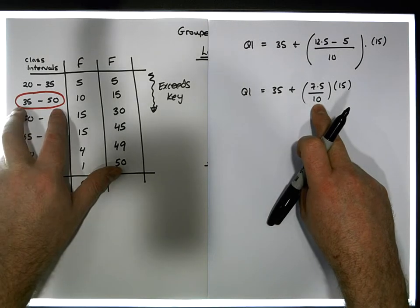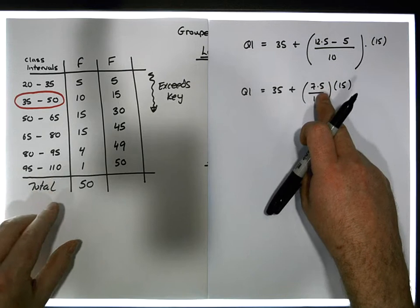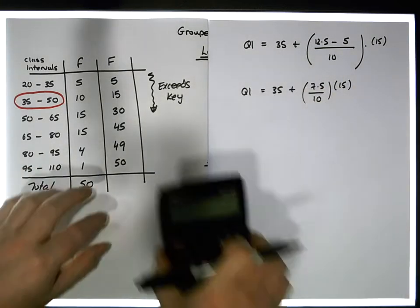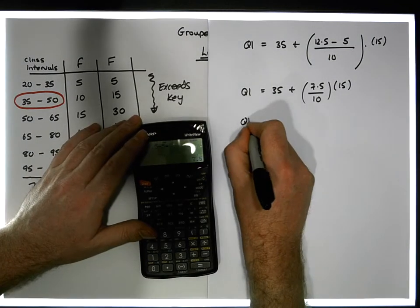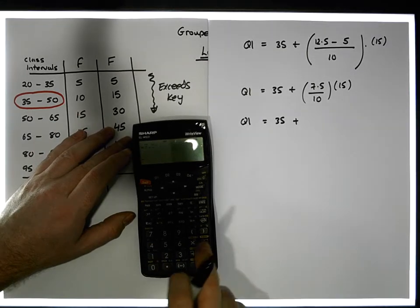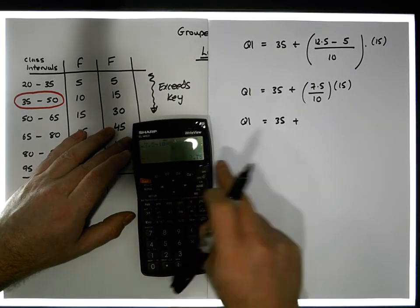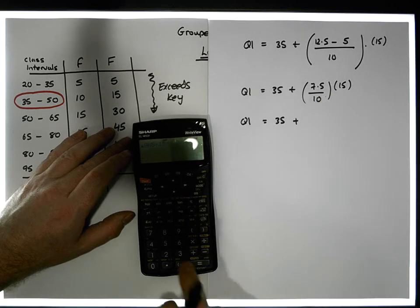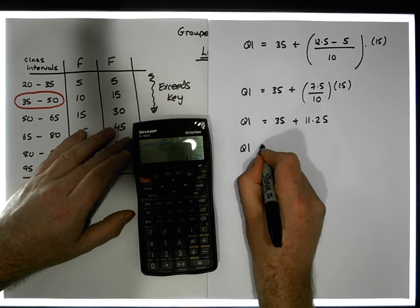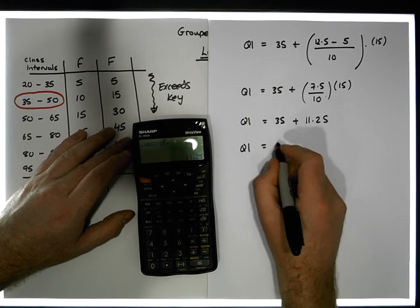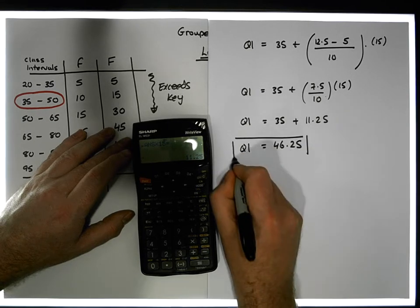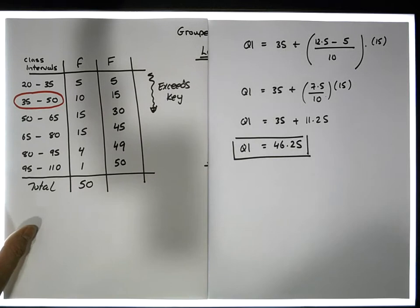The width of this class is 15, so we move along 7.5 tenths of the 15, and that's where we demarcate the first quartile. So Q1 is equal to 25 plus — working out the fraction: 7.5 divided by 10 equals 0.75, and multiplied by 15 gives us 11.25. So Q1, the first quartile, is at position 46.25. This is an important value because we'll reuse it when calculating the outliers.